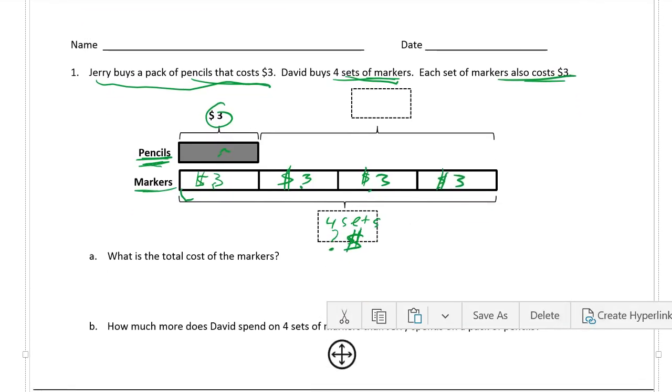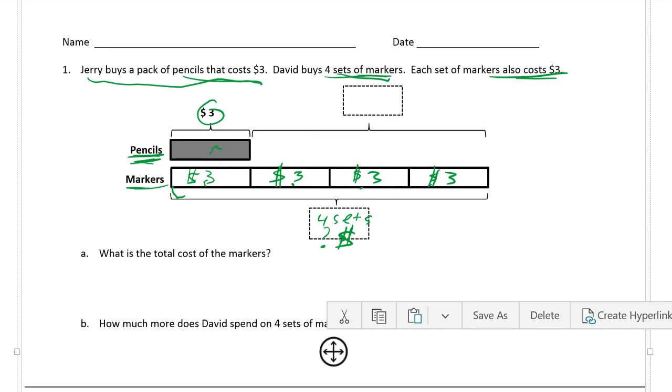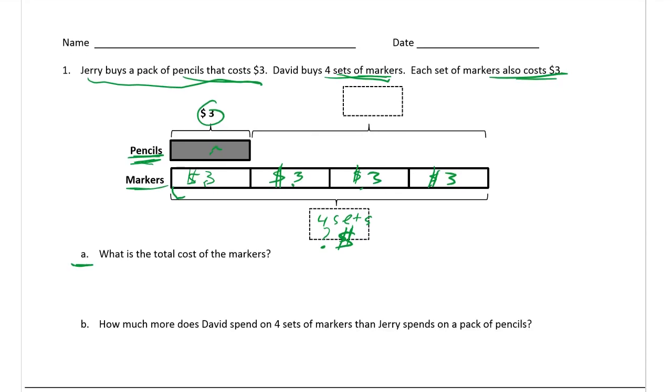What is the total cost? Now we have the questions. What's the total cost of the markers? So that's this right here that we're trying to figure out. It's one, two, three, it's four threes, right? So it's four times three. Twelve. The markers cost $12.